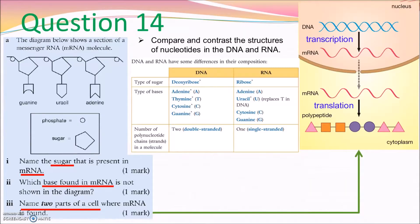In question 14, part A1, the sugar present in the RNA should be the ribose. Part 2, the base found in the mRNA are AUCG. So, which one is missing in the diagram? But remember to write the full name of the base, but not just the letter AUCG. Don't be lazy. Part 3, where does the mRNA appear in the cell? You can refer to the diagram shown here.